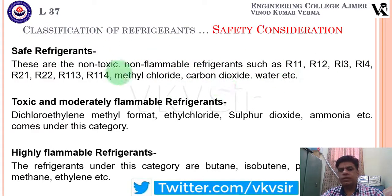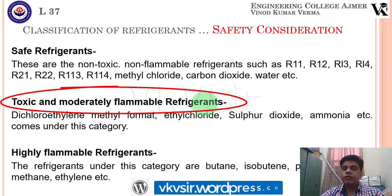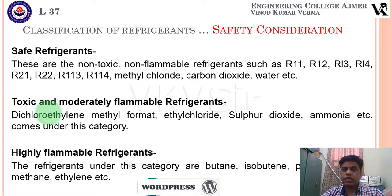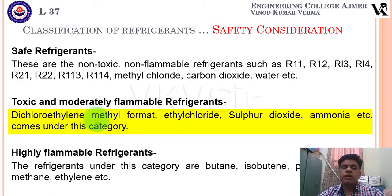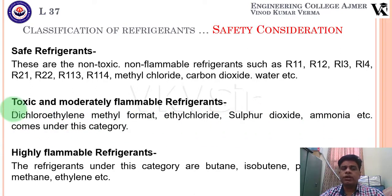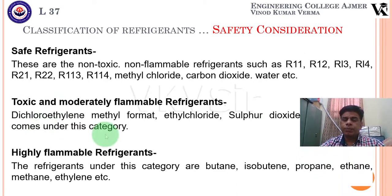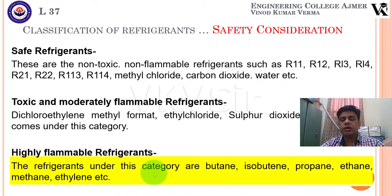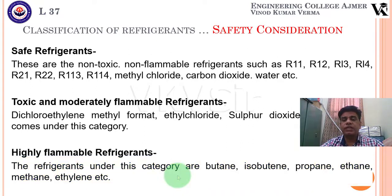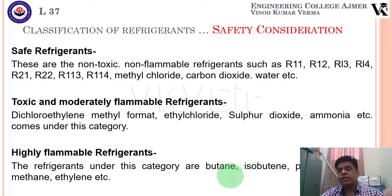The second category is toxic and moderately flammable refrigerants, which includes dichloroethylene, methyl formate, ethyl alcohol, ammonia, and similar substances. The third category consists of highly flammable and explosive refrigerants such as butane, isobutane, propane, ethylene, and methane. These are very fire-prone, so we try to use them as secondary refrigerants to avoid direct contact with people or food.